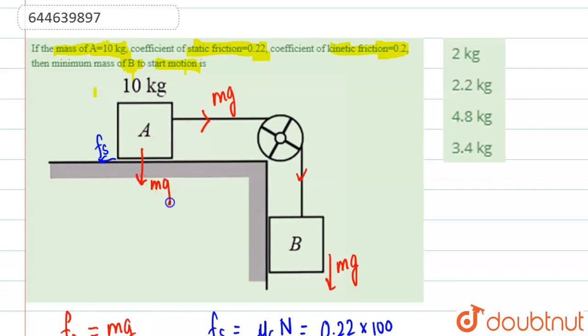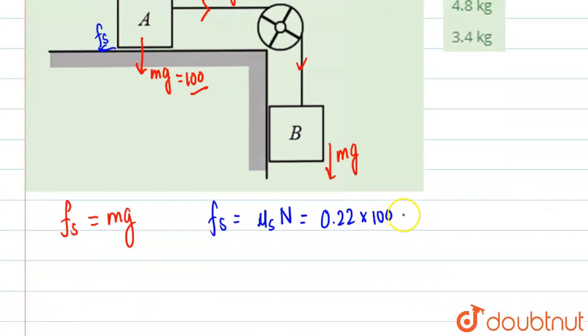So this normal will be equal to this 100. This is why we are writing 100 here. So now what we're going to get—we are going to get fs value as 22 newtons.